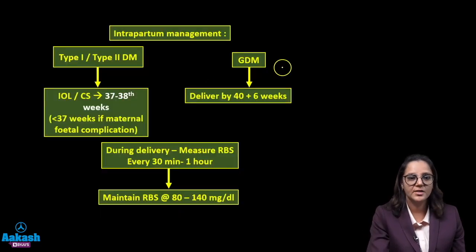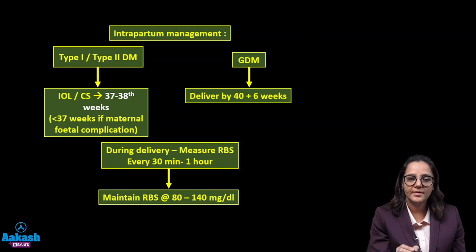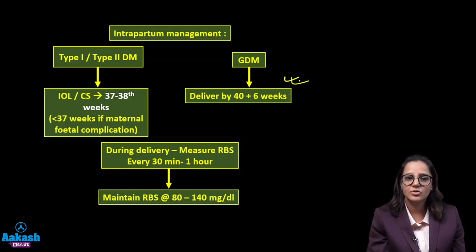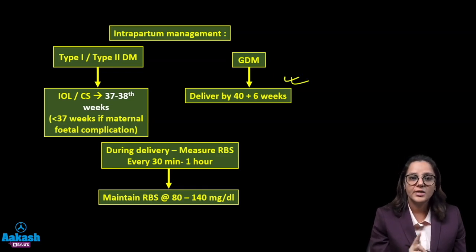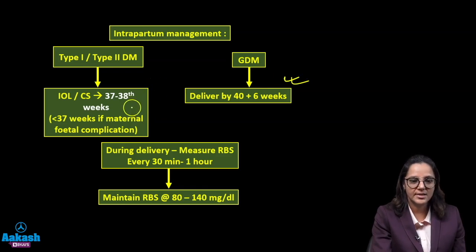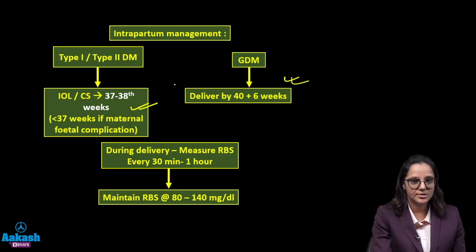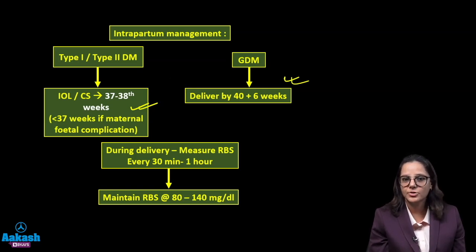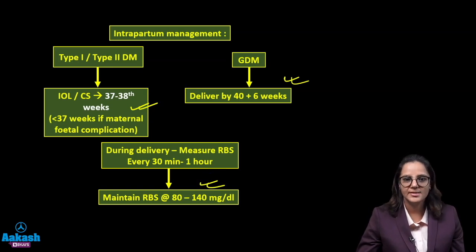What is the intrapartum management? If she is gestational diabetes — meaning she developed diabetes in pregnancy — you will deliver her by 40 weeks, 6 days because complications will be lesser. But if the patient is a known case of diabetes type 1 or type 2, you will induce her or do caesarean section by 37 to 38 weeks of period of gestation. Throughout delivery, blood sugar levels are monitored and kept at 80 to 140 mg per deciliter.